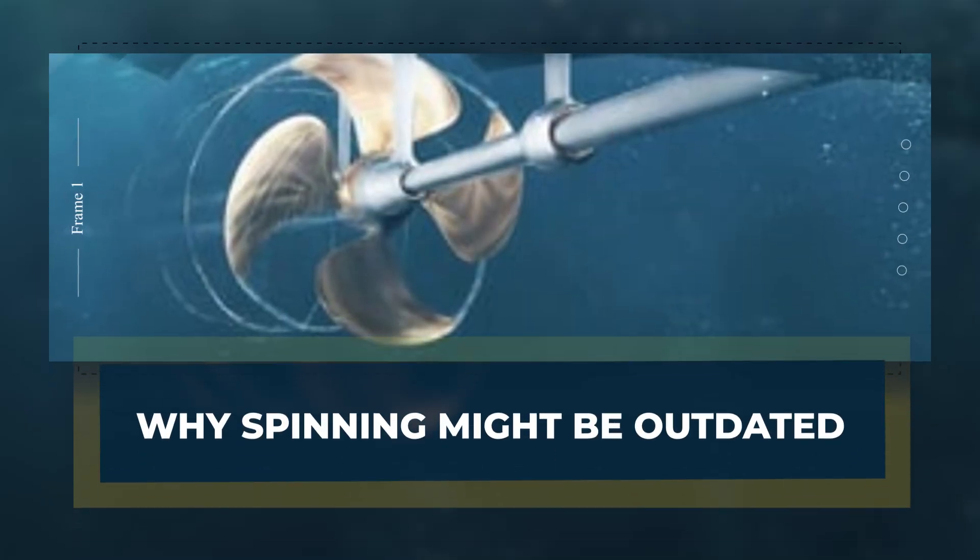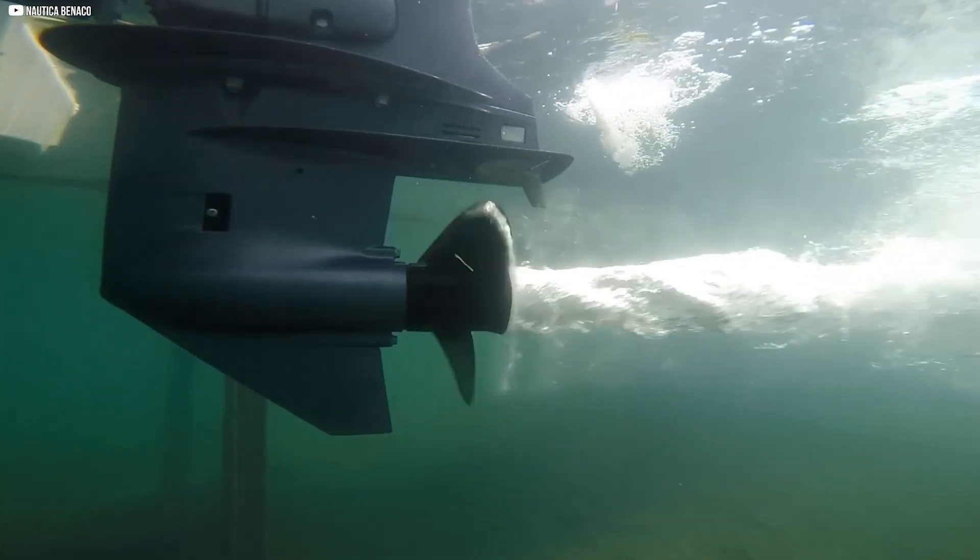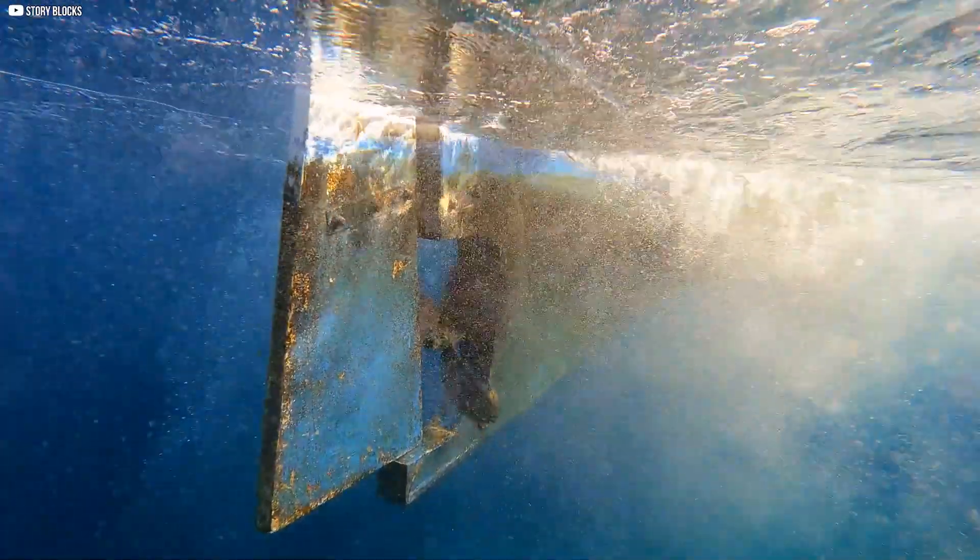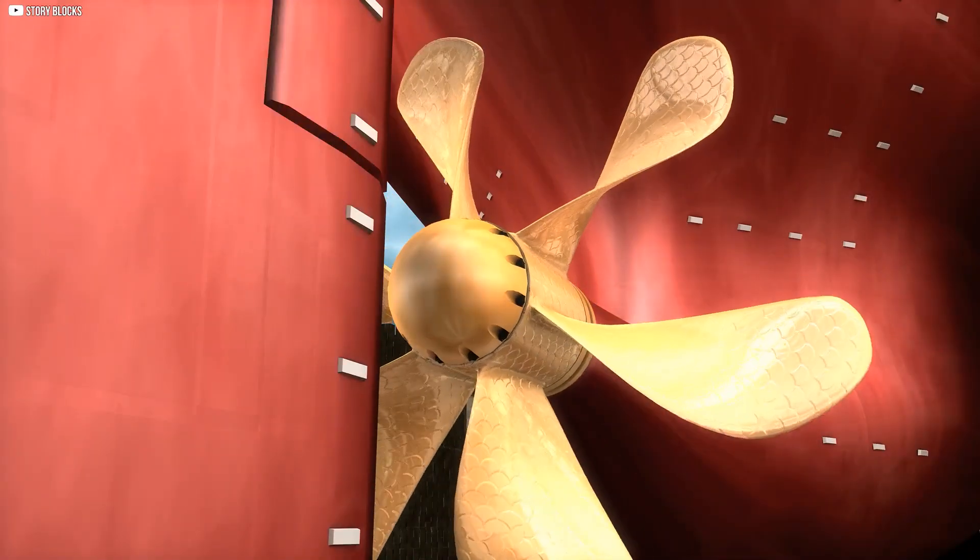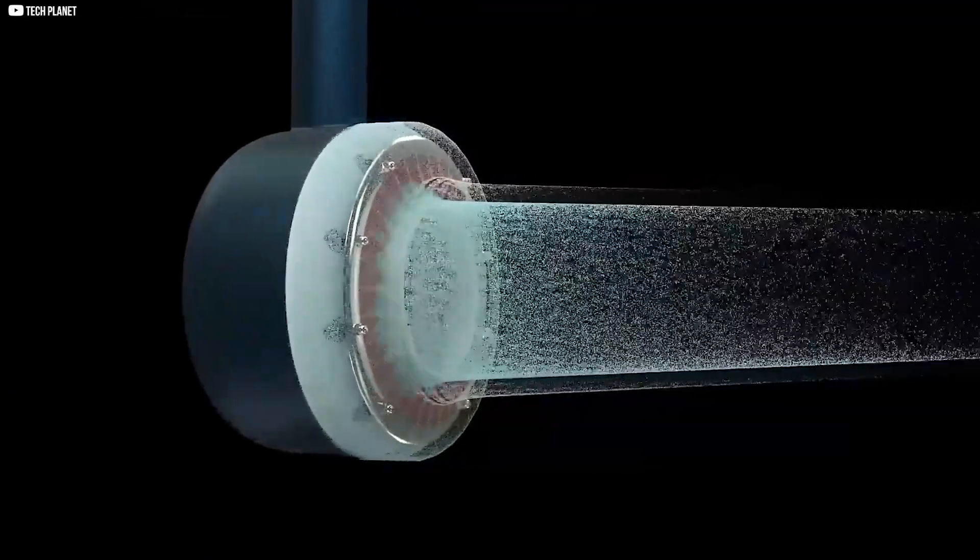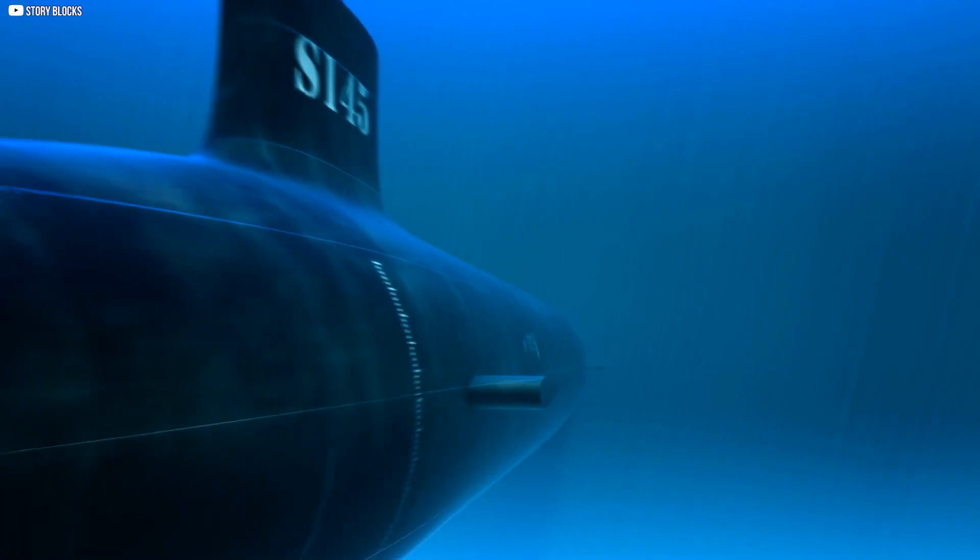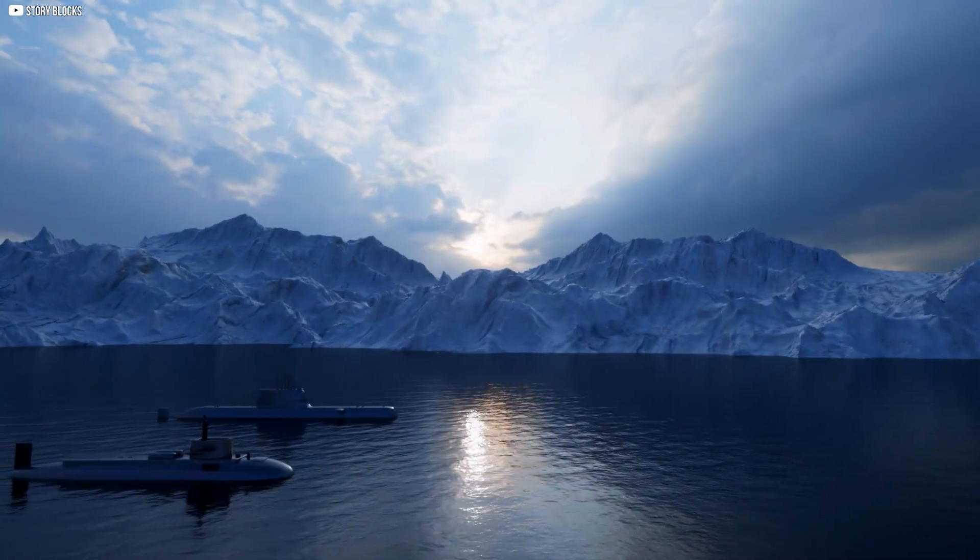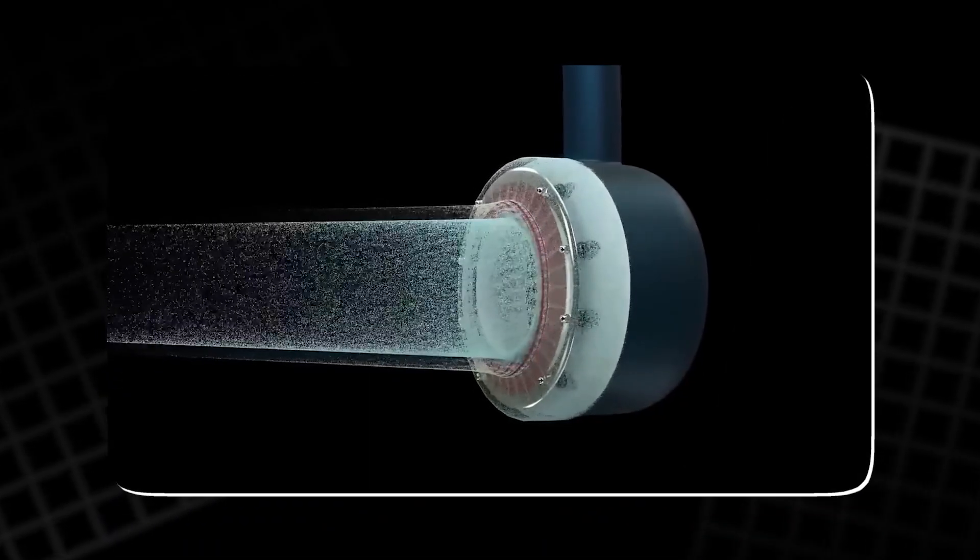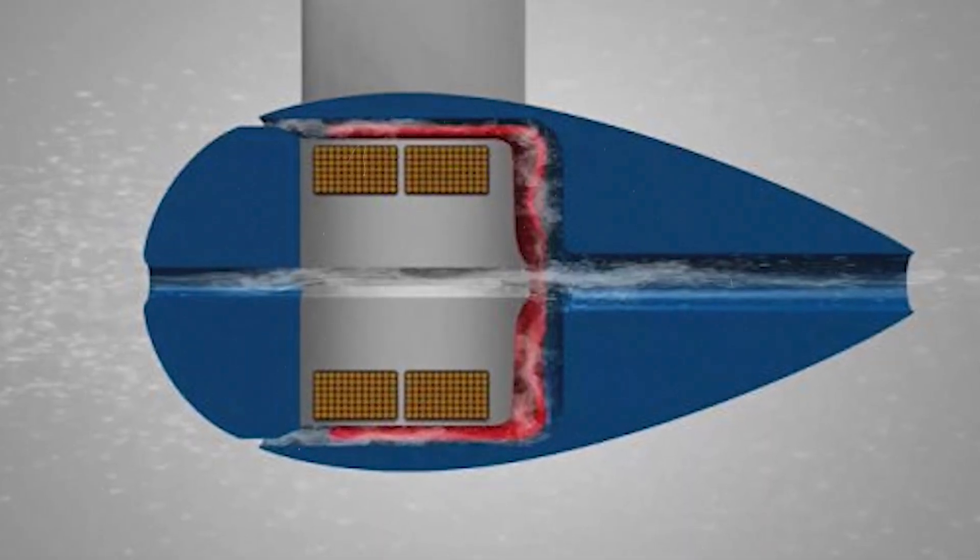Why spinning might be outdated. Propellers have ruled for centuries. They work. They're fast. But they also have problems. They're noisy, dangerous, and inefficient in certain conditions, especially at low speeds or near delicate ecosystems. Membrane-based propulsion offers a quieter, more eco-friendly alternative. Think of coral reefs, research submarines, or autonomous water sensors. In these environments, subtlety and safety matter more than speed. And while membranes might wear out, they're cheap and easy to replace. For some applications, that trade-off is well worth it.